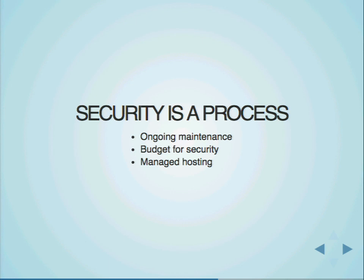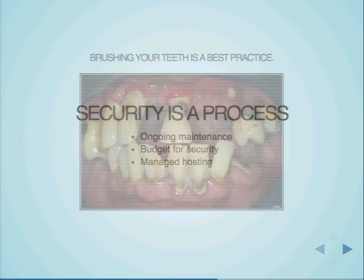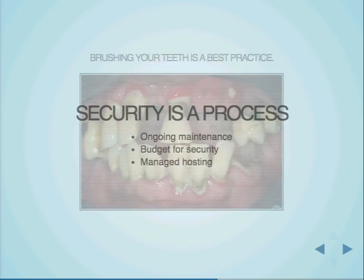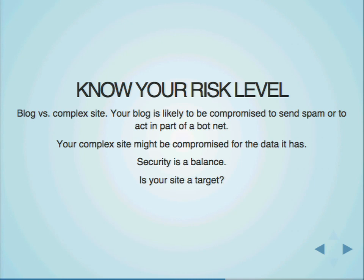You should have a process surrounding your security. When you make changes on your site, think through how they'll impact security. Found a really cool module you want to install? How many permissions is it going to add? What type of complexity does it require? You should have a budget for security — in terms of money, but also time. You should also think through what your risk level is. If you're a blog, you're likely to be compromised for spam purposes — someone wants to use your blog to send spam, host spam, or do link referrals for SEO. But if you're a complex site, you might be compromised because of the data you have. If you're a bank or Amazon with people's personal information, people will try to compromise you to download your database.